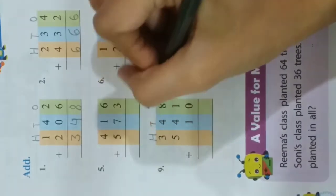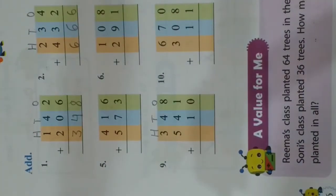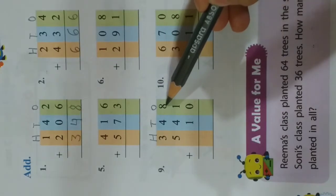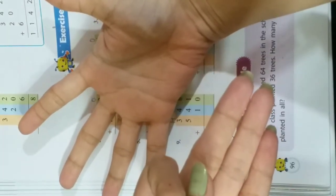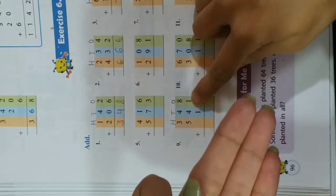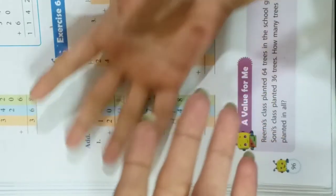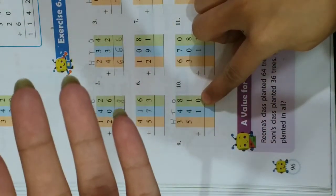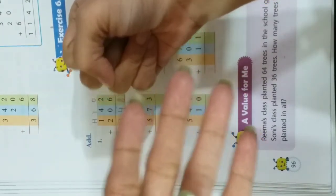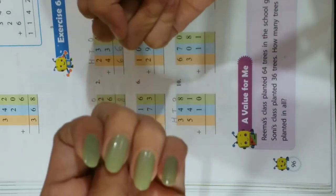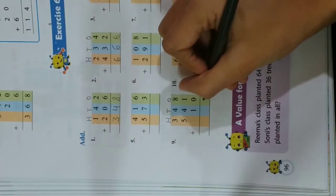Now children, have a look at the ninth example. This is also very simple. Again write H, T, O on top. At ones place you have 8 on top — take out 8 fingers. In the middle you have 1 — take out 1 more finger. Below you have 0, meaning nothing, so you will not take out any finger. Count all: 1, 2, 3, 4, 5, 6, 7, 8, 9. You get 9, so write 9 over here.